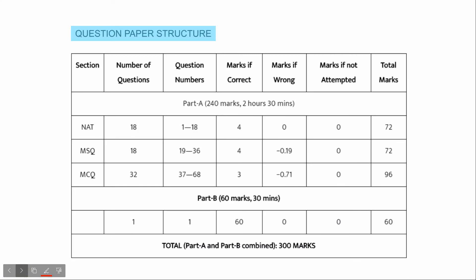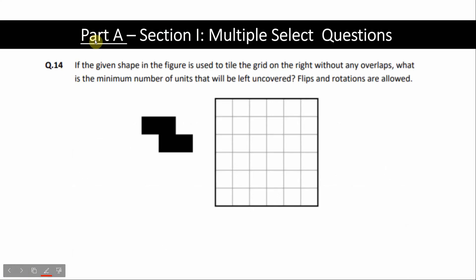Hey namaste, Part A Question 14: If the given shape in the figure is used to tile the grid on the right without any overlaps, what is the minimum number of units that will be left uncovered? So we have to use this figure here, and you will see some blocks that will be uncovered, which will not be covered. Flips and rotations are allowed, so we can flip and rotate.